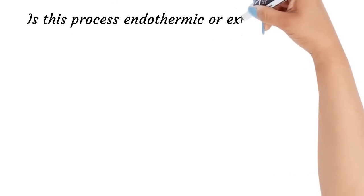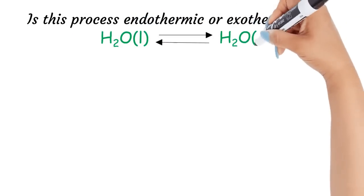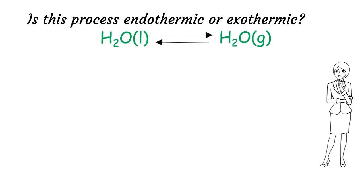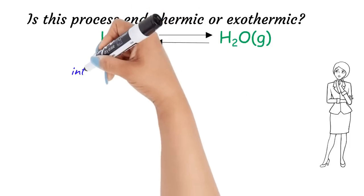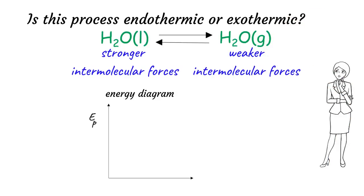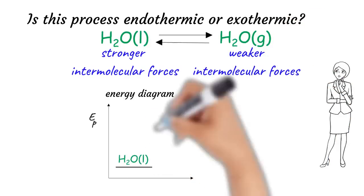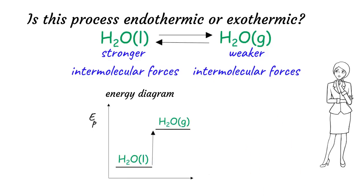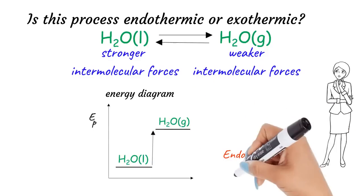For our final example, let's consider the energetic favorability of a physical process: vaporization of liquid water into water vapor. Here on both sides of the process we have the same substance in two different phases. Therefore, the covalent bond strength will not be useful as it will be approximately the same in both phases. However, in the liquid phase, particles are much closer to each other and have stronger intermolecular forces between the molecules compared to the gas phase. Therefore, we can expect the liquid water to be more energetically stable than water vapor. Thus, we can predict this process to be an endothermic process with a positive delta H.